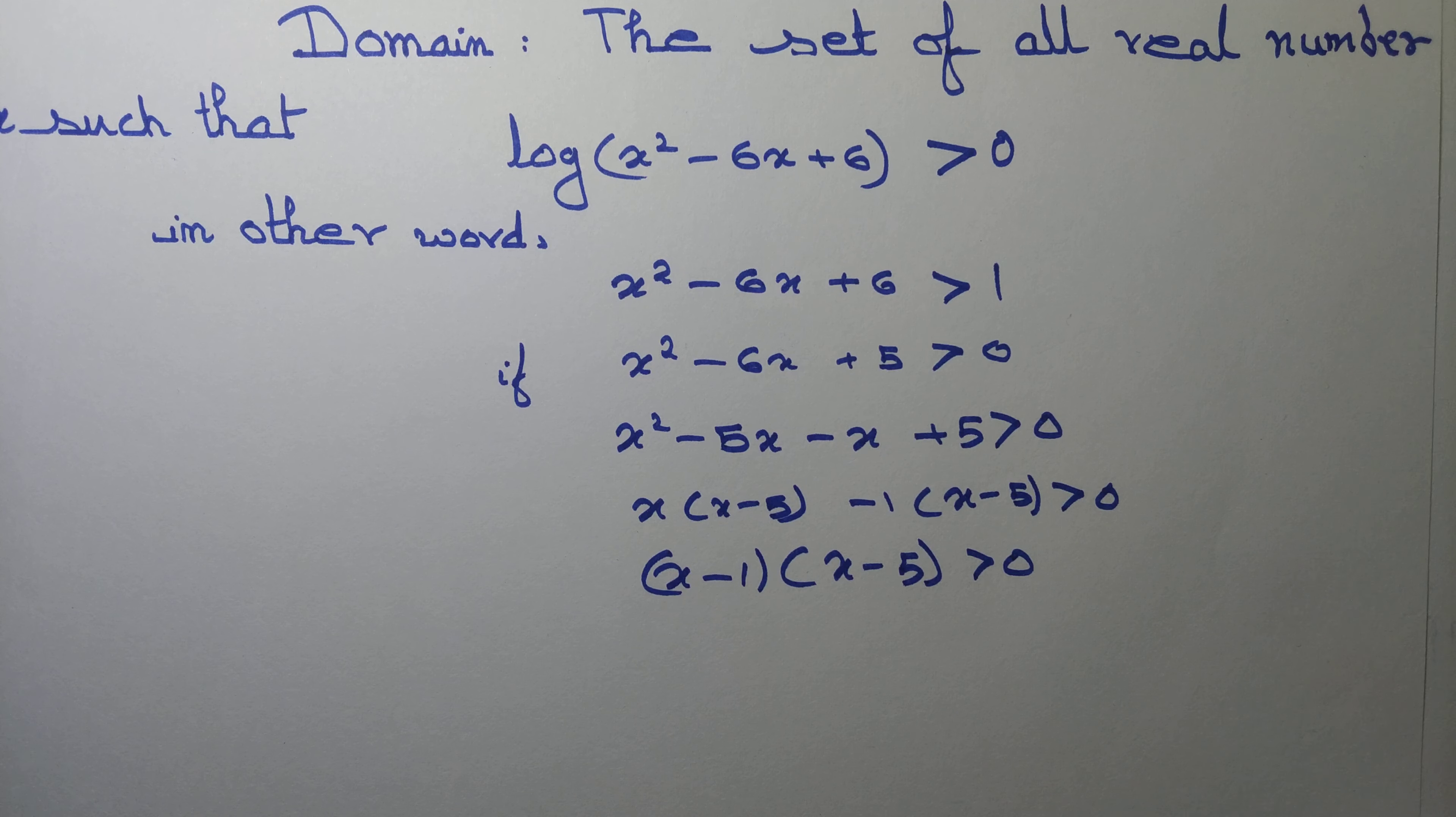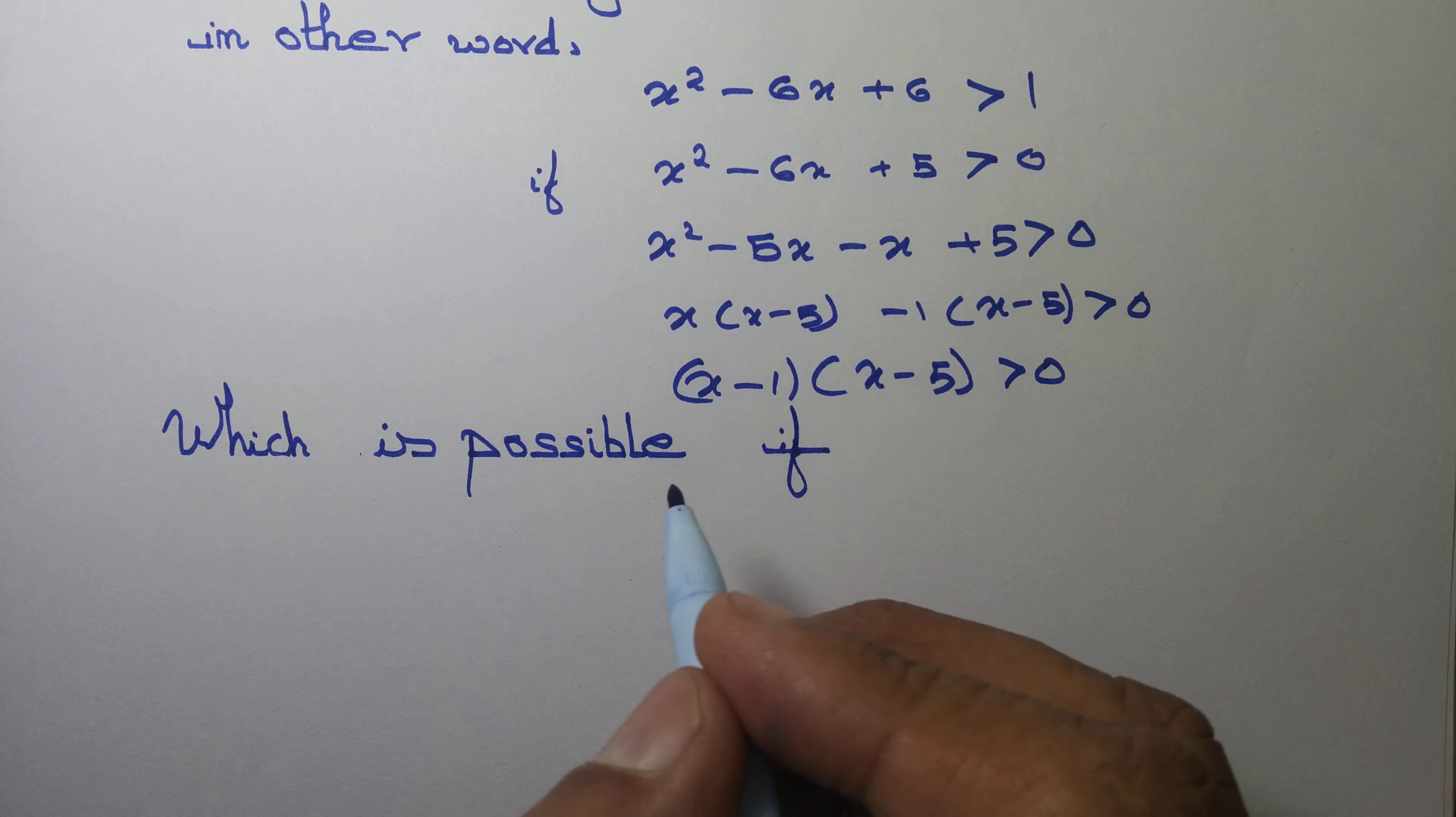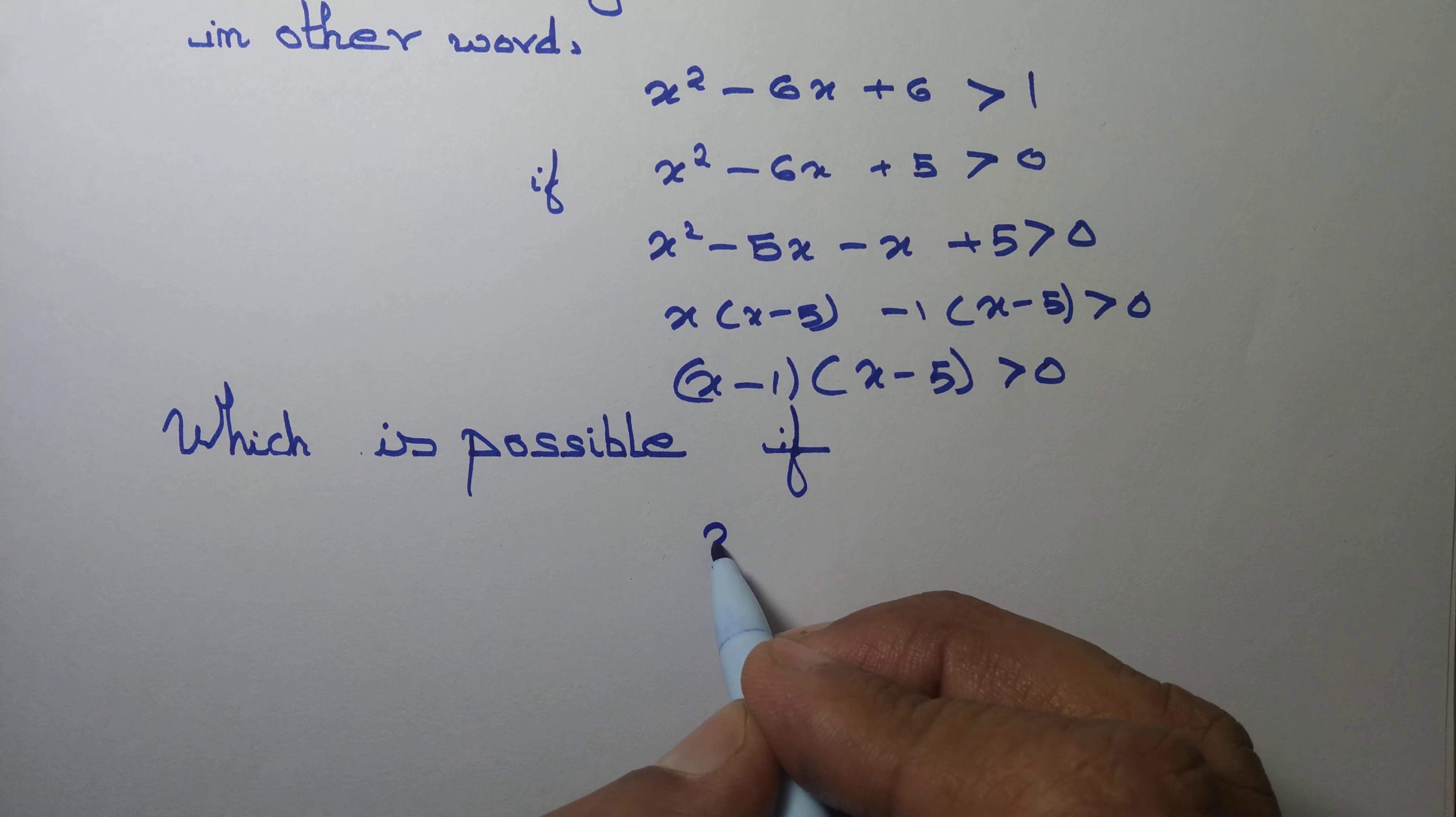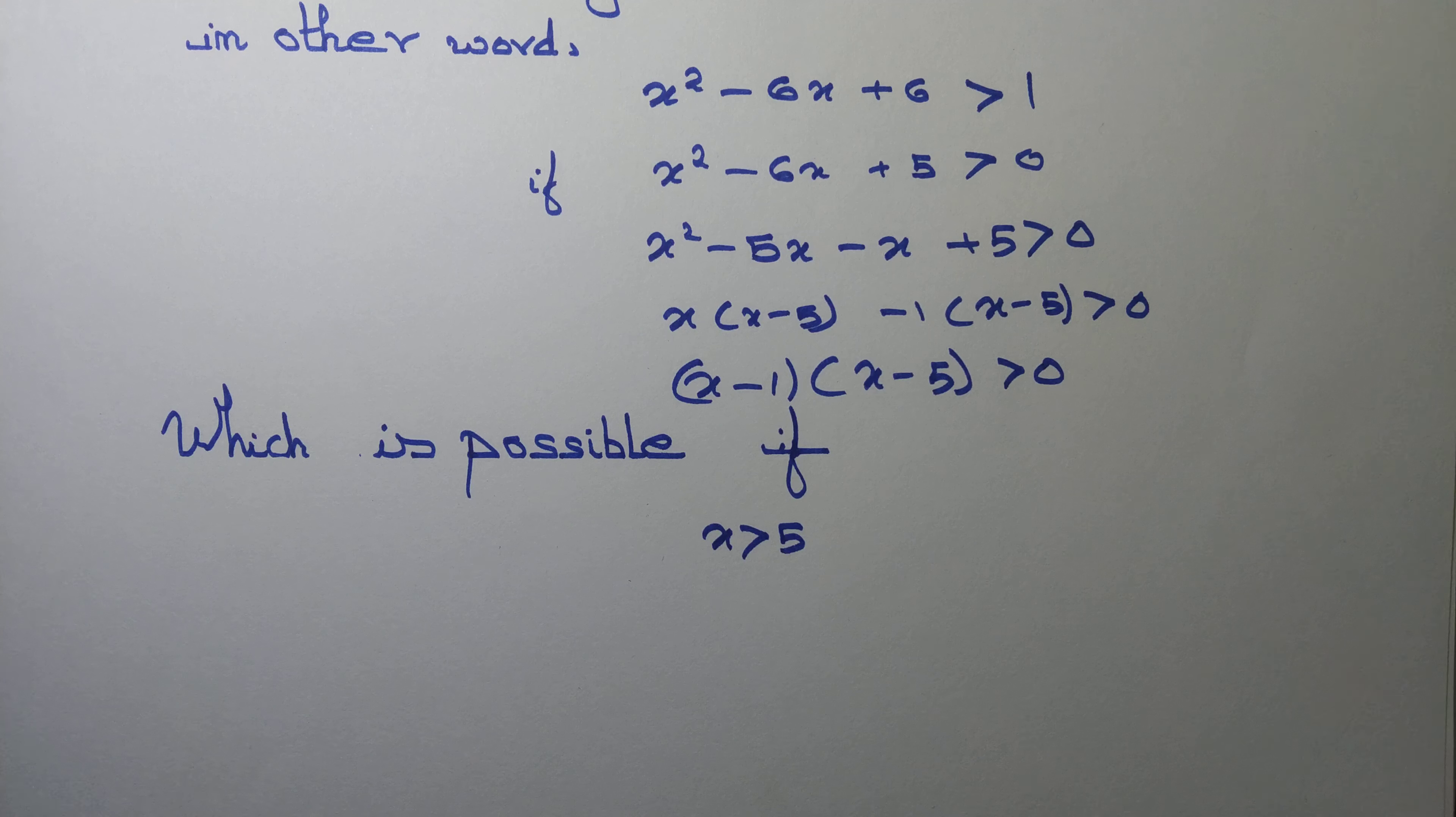Now when is it that x minus 1 into x minus 5 is greater than 0? Obviously it is possible. Now x minus 5 into x minus 1 is greater than 0. This is possible if x is greater than 5 because this quantity will remain positive and this quantity will also remain positive.